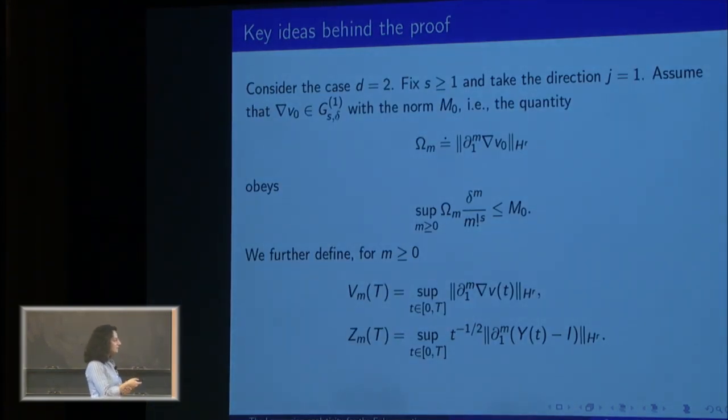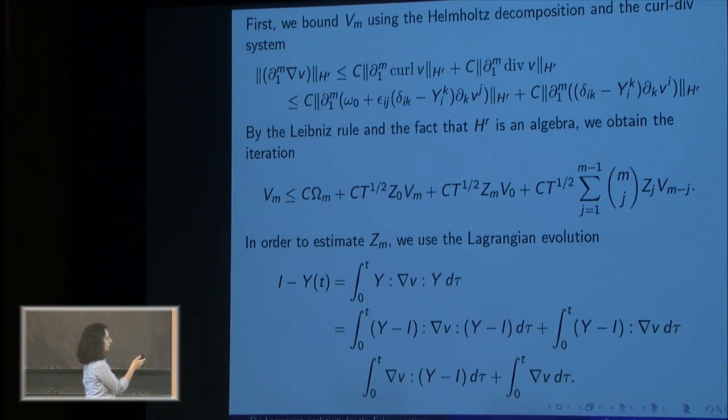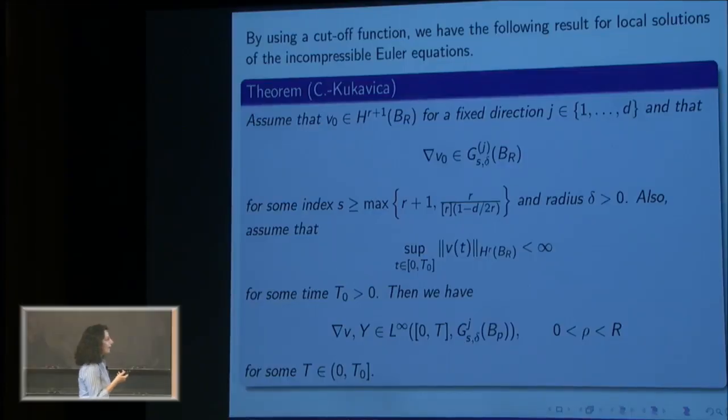The basic idea is to make use of the vorticity equation and the evolution equation for Y. We try to estimate these two quantities, v_m and z_m, inductively. For the first one, since we are in the whole space, we switch the order of the derivative and the gradient and apply the Hodge decomposition, and then the elliptic curl-div system to have this nice iteration for v_m. For the latter one, for y_m, we use the Lagrangian evolution. This gives us the persistence of radius. The same thing is still valid for local solutions. By multiplying with a specific cutoff function, we still get the persistence of radius.